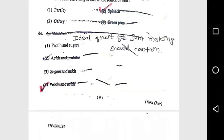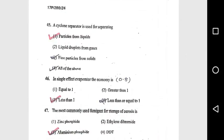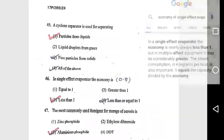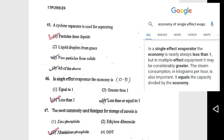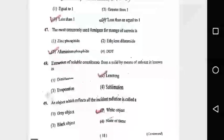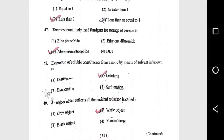Question 42: The edible part of pomegranate is the aril. Question 43: Which of the following is a richest source of iron? Spinach. Question 44: Ideal fruit for jam making should contain pectin and acid. Question 45: A cyclone separator is used for separating particles from liquid. Question 46: In a single effect evaporator, the economy is less than 1.